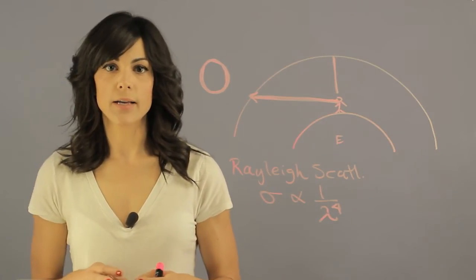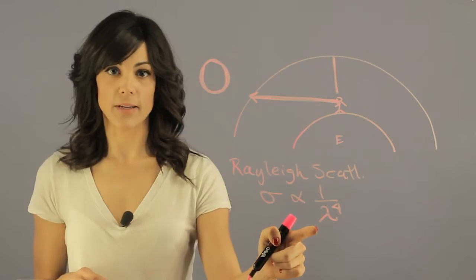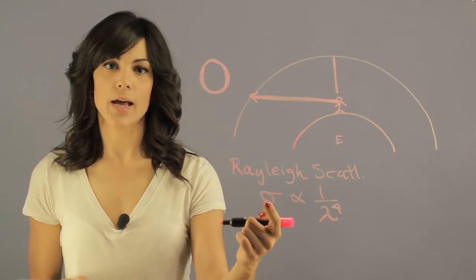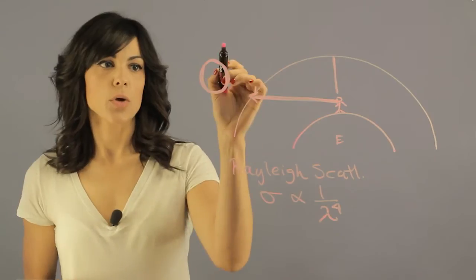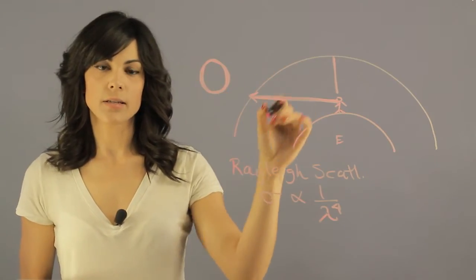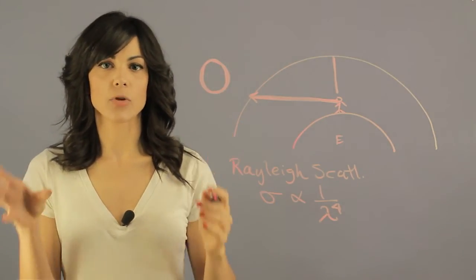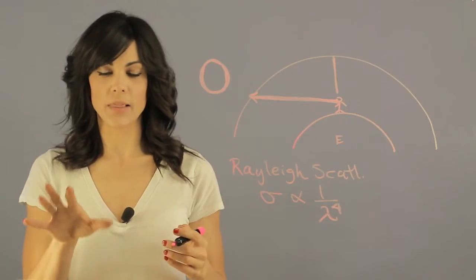Now blue is a very short wavelength, therefore blue has a higher probability of getting scattered in the atmosphere. So when you have the light, blue will scatter away and you will only be left with the red side of the spectrum, with the red wavelengths, and that's why it appears red.